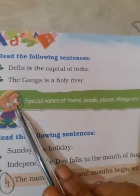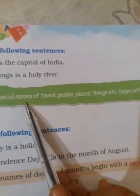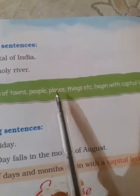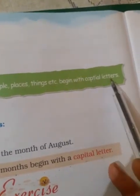So what does the 3rd point say? Special names of towns, people, places, things, etc. begin with capital letters. Very good.